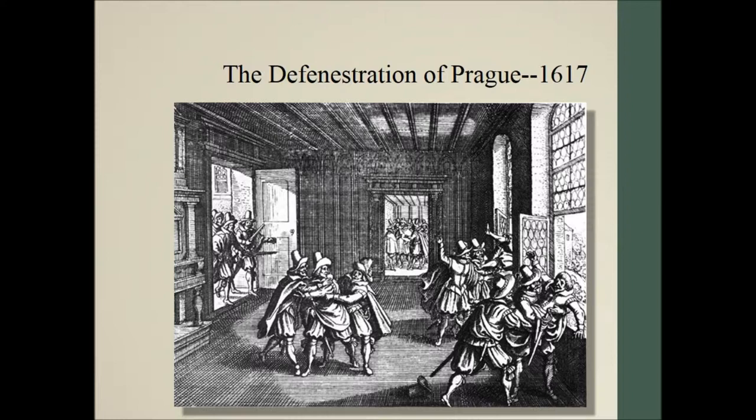The Defenestration of Prague — defenestration means to be thrown out a window. Ferdinand II sent some Catholic representatives to Bohemia and told the Protestants that they had to shut down their churches. As you can see from this woodcut, what they ended up doing is tossing the Catholic representatives out a window. This happened in 1617. There are sort of two versions: the Catholic representatives actually survived, and according to the Catholics, angels came down and carried them to the ground safely. The Protestants have another version — for lack of a better word, they said the Catholics survived because they fell into a pile of manure.